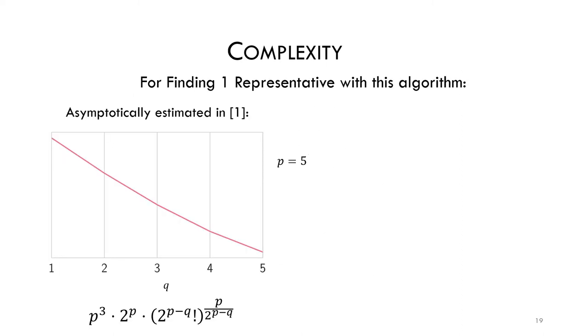Birukov et al. estimated that the complexity of such an adapted algorithm would asymptotically follow this formula. We draw it here for p equal to 5, so 5 input bits. As you can see, the complexity increases as q, the number of output bits, decreases.